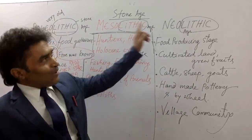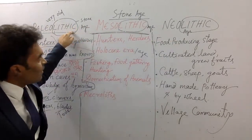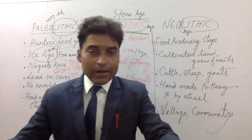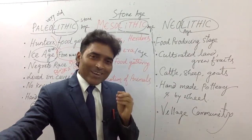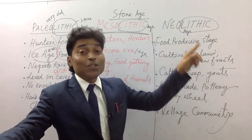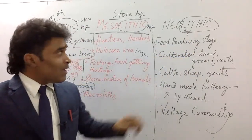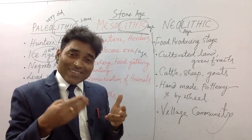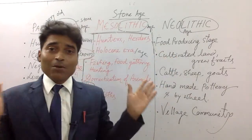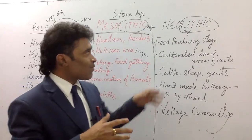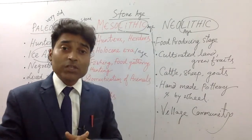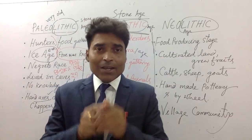Now we will go to the Neolithic age — the new stone age. In the Neolithic age, many good and interesting things came. This is called the food producing stage. For the first time, cultivation started in this stage. This is a very important point — a discussion question may be asked: which of the following stone ages is regarded as the food producing stage? The answer is Neolithic age.